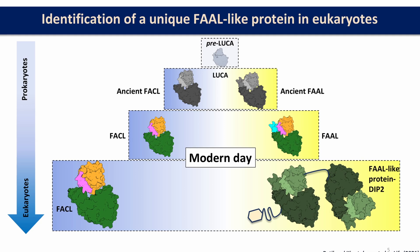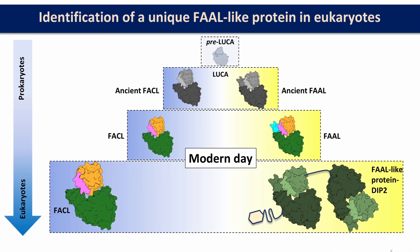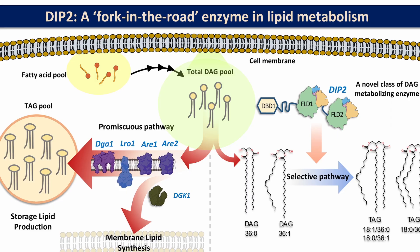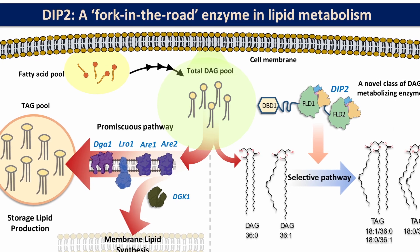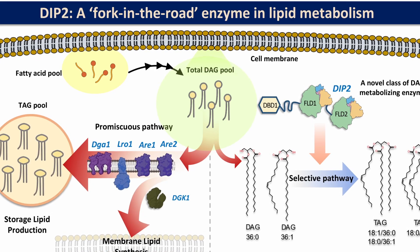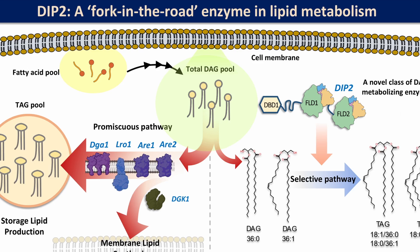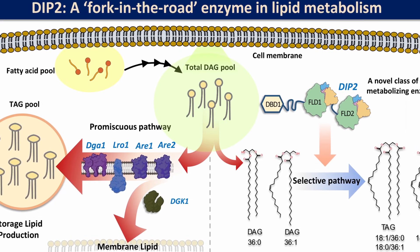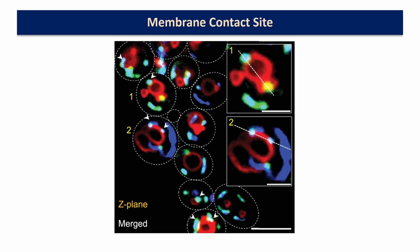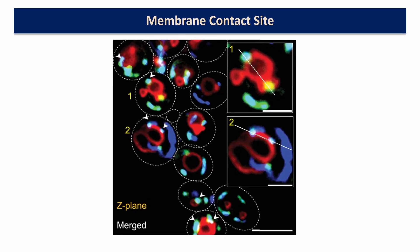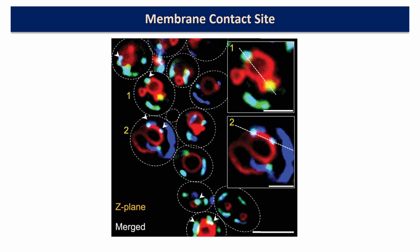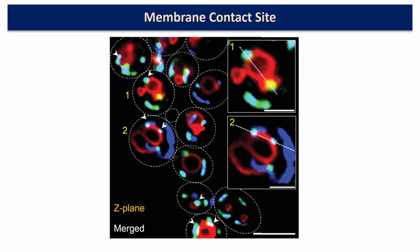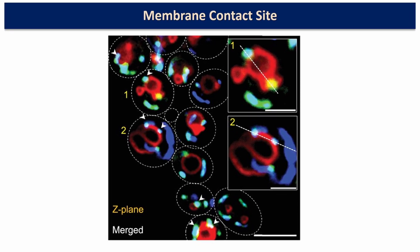We are also interested in understanding the evolution of this protein across life forms. In eukaryotes, we have identified a distant homologue of FALs called DIP2, where it has completely changed its avatar and is acting on a completely different class of lipids called diacylglycerols. We have also seen that this protein inside the eukaryotic cell acts at a specific location called membrane contact sites — places where any two organelles come together, interact, and exchange metabolites for communication.